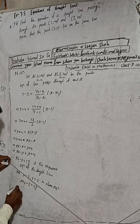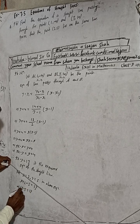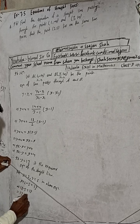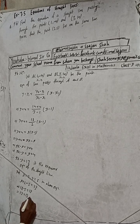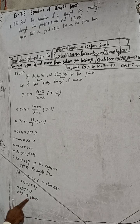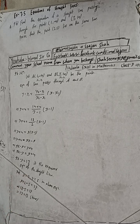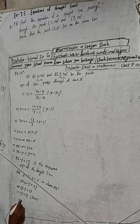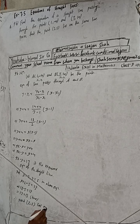Substituting: 9 times 2 minus 5 equals 18 minus 5, which equals 13. The right-hand side is also 13. Since LHS equals RHS, the equation is satisfied, which is true. Therefore, the point (2, 5) lies on the same line.